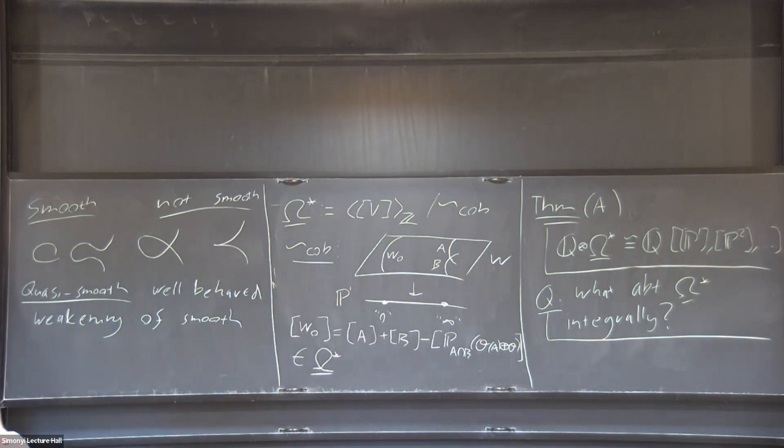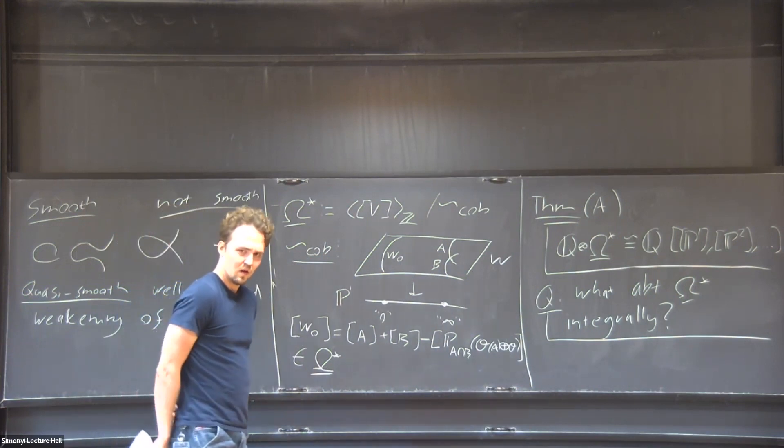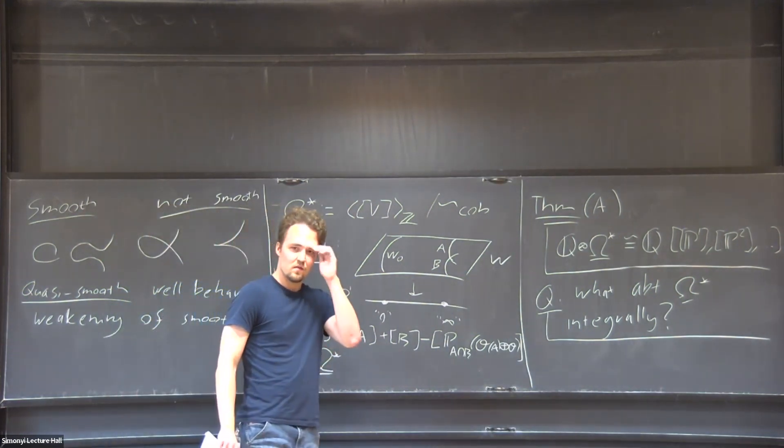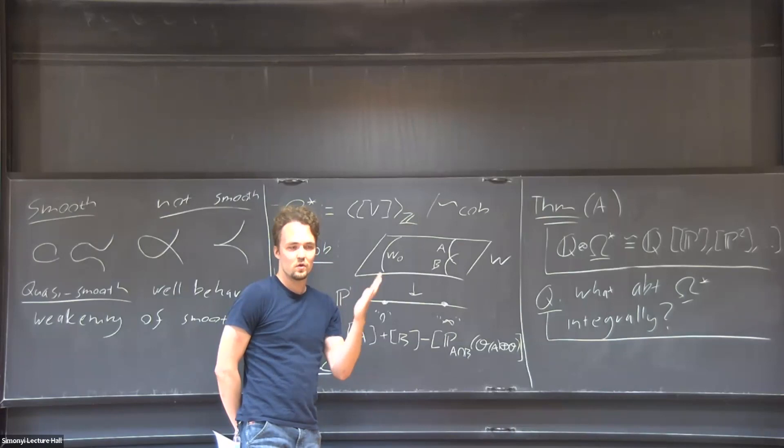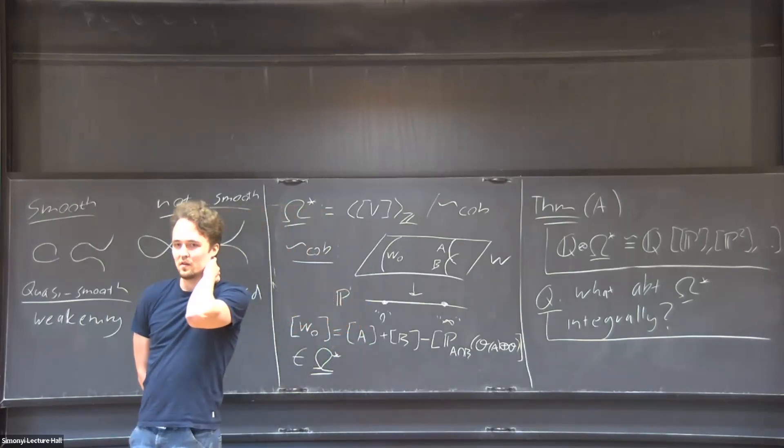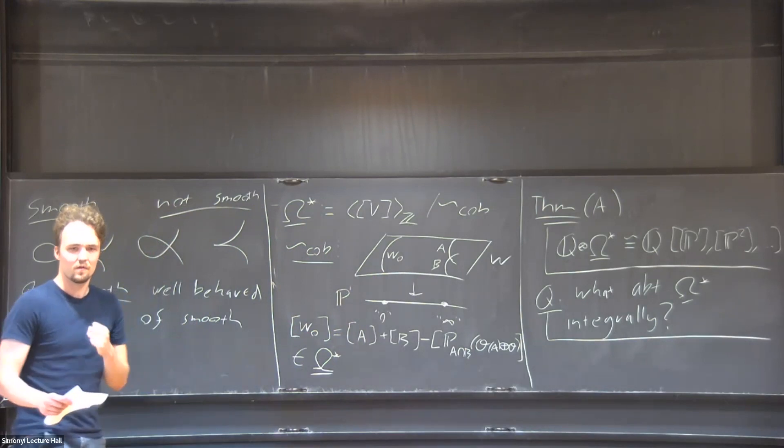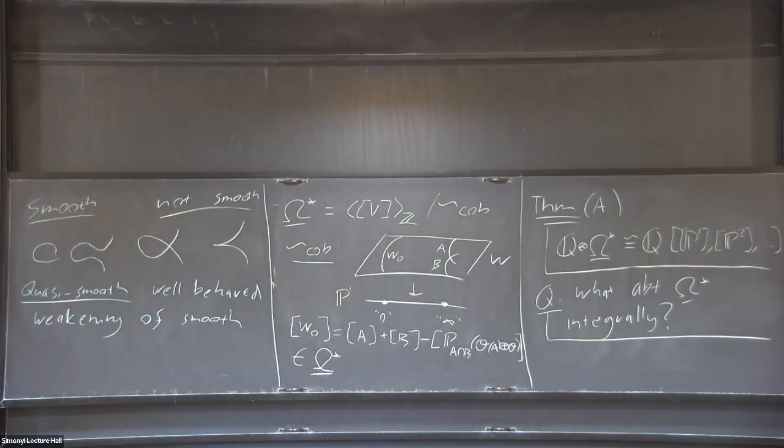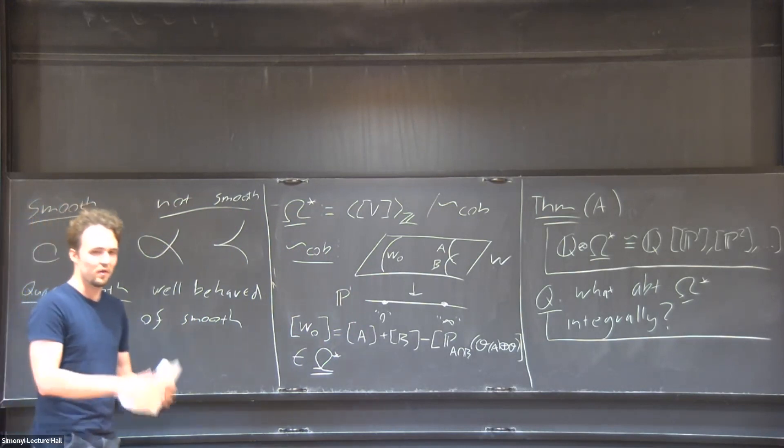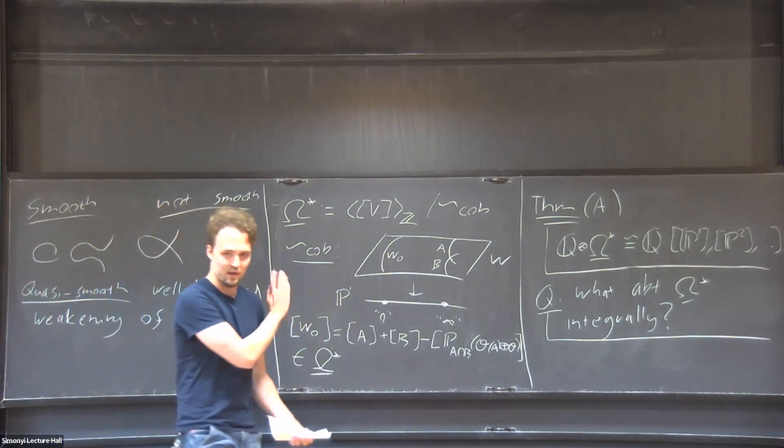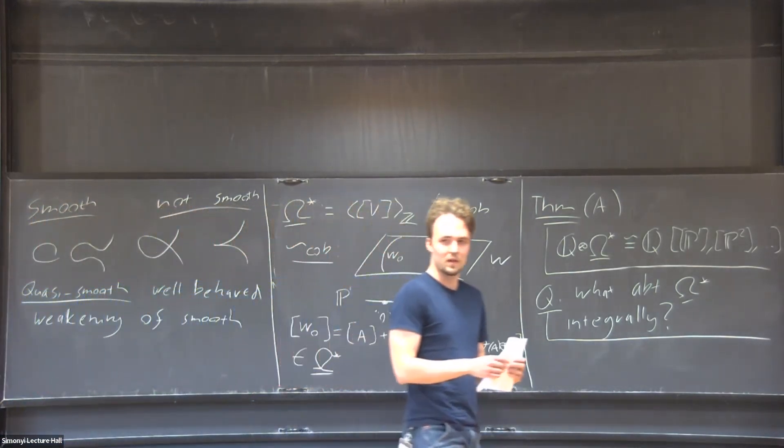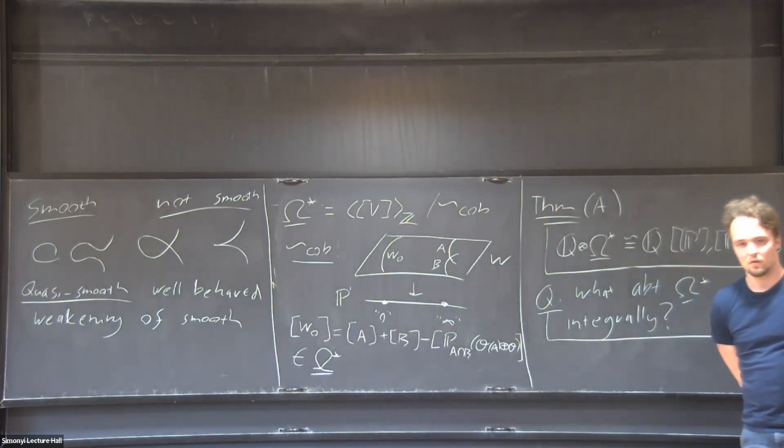You can just take Chern classes of the tangent bundle. You have to define the tangent bundle—anything quasi-smooth has a tangent complex, perfect of amplitude one. Then you can take Chern classes, get numbers out, and basically all the possible numbers you can get out completely determine the rational cobordism class. Just like for the smooth version.